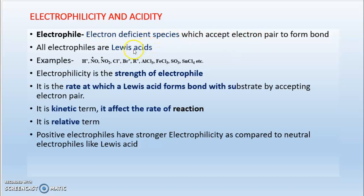According to the Lewis acid concept of acidity, an acid is any species which has an empty orbital to accept electrons. So Lewis acid means any species having an empty orbital to accept electrons. We can say that all electrophiles are Lewis acids, but we cannot say that all Lewis acids are electrophiles. Remember this concept.